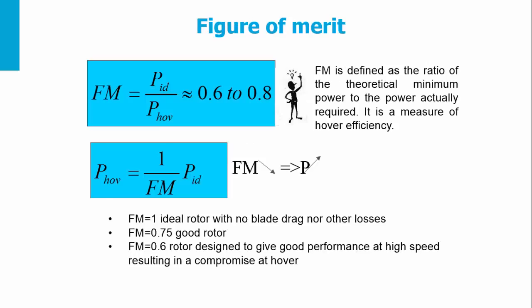The figure of merit is defined as the ratio of ideal power for hover to the real power for hover. It is a design parameter which shows the hover efficiency, with values between 0.6 and 0.8.